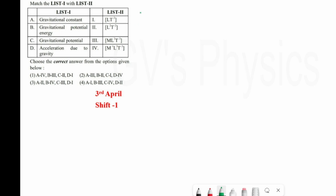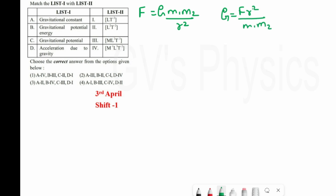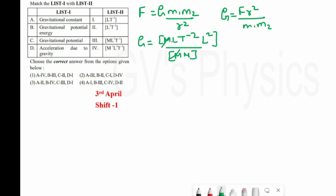Next question: we again have to find the dimension formula for the following quantities. First one is the gravitational constant. Using the formula F = Gm₁m₂/r², we rearrange to G = Fr²/(m₁m₂). Substituting: G = MLT⁻² × L² / M² = M⁻¹L³T⁻². So gravitational constant A matches with 4.